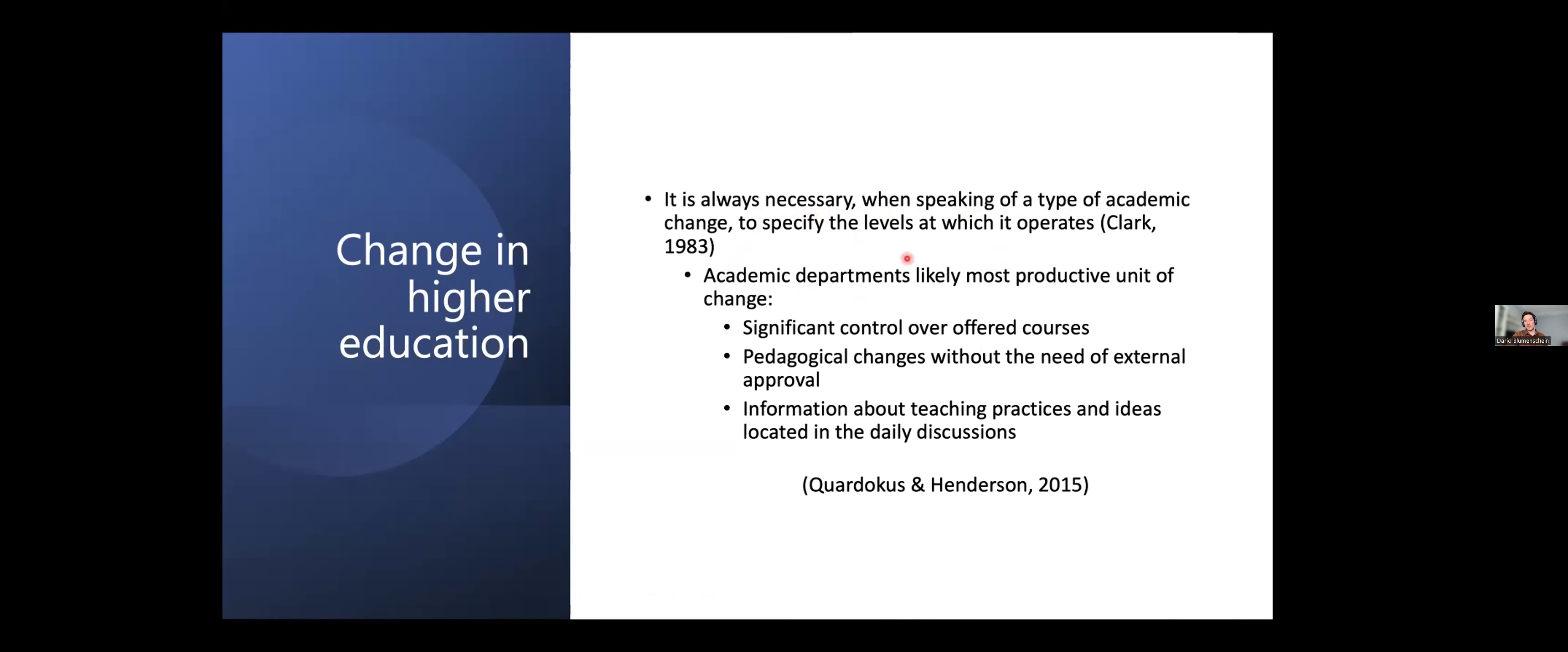That's one important thing to mention because they say that when you talk about academic change, you need to specify the levels at which it operates. And this is for several reasons, because different levels of change are going to behave completely differently depending on a lot of influential factors. And for us, we realized, and many other authors suggest, that academic departments seem to be most productive arenas for change. And that for several reasons. One is because in the department, you have significant control over courses that are offered at the department. And there can be pedagogical changes without the need of some external approval or external discussion.